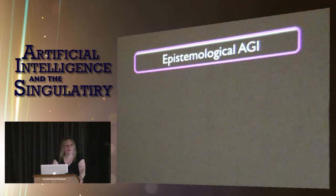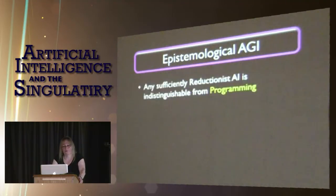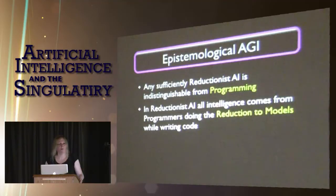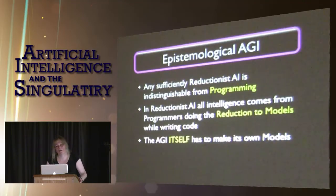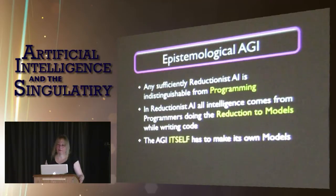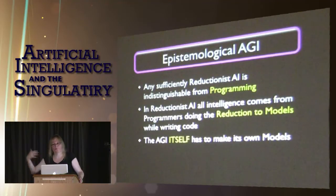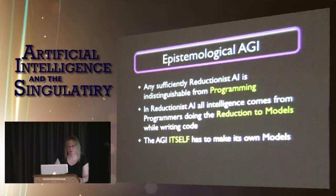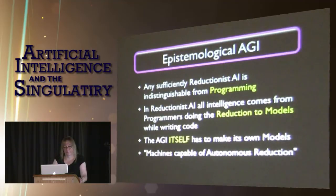Epistemological AGI would understand that any sufficiently reductionist AI is indistinguishable from programming. In reductionist AI, all intelligence comes from programmers doing the reduction to models while writing the code. But that's wrong — it's the AGI itself that has to make its own models. We are not building a model of the world using scientific methods; we are building something that can build a model of the world using scientific methods. We have to take one meta step away and build something that can do the same thing. We are aiming at machines capable of autonomous reduction — or, more simply, understanding machines.